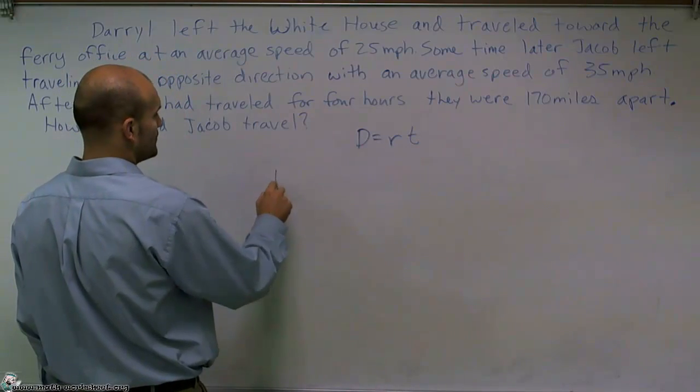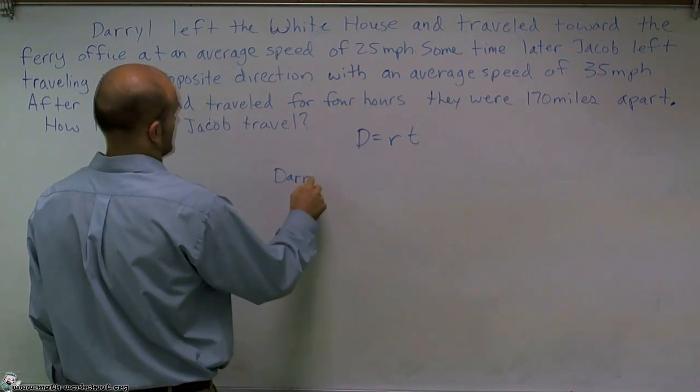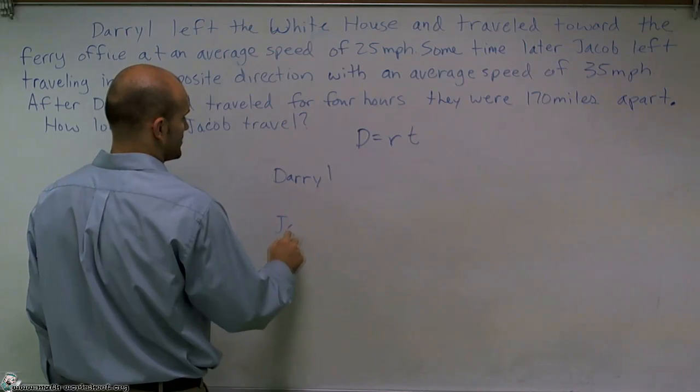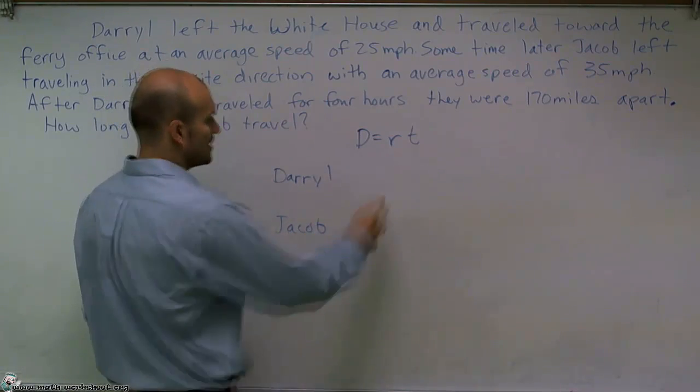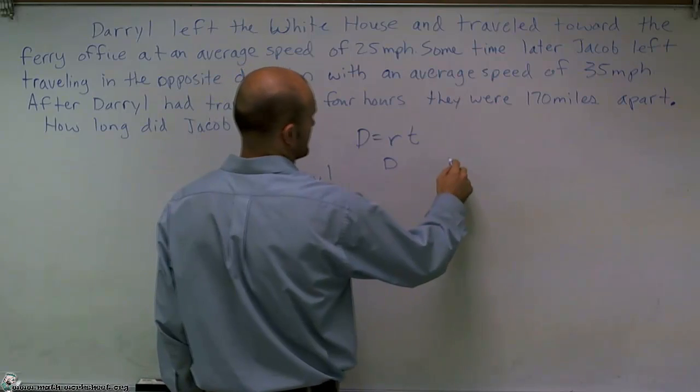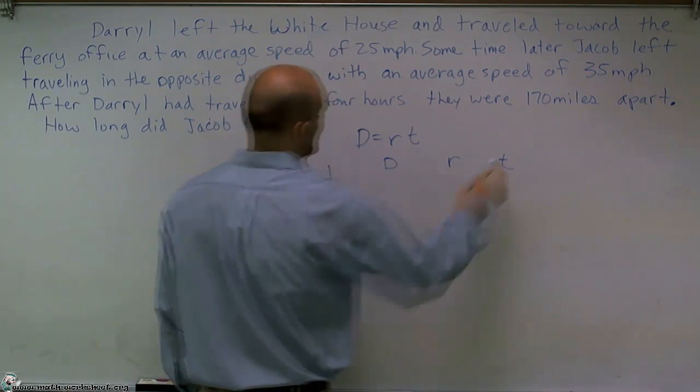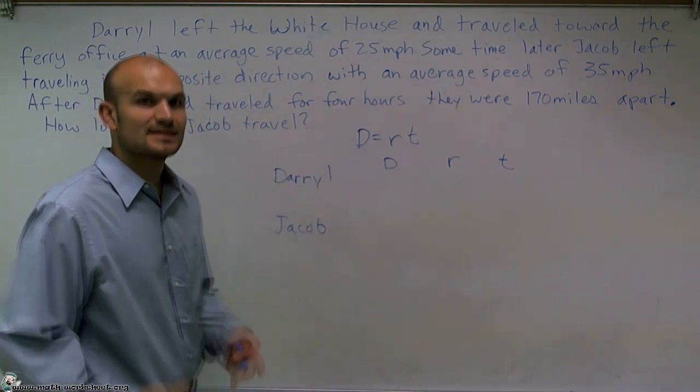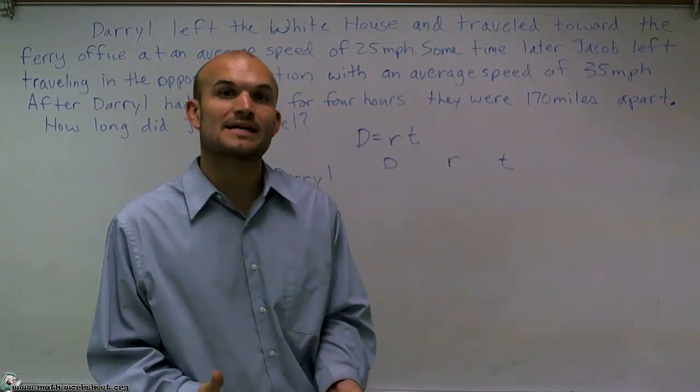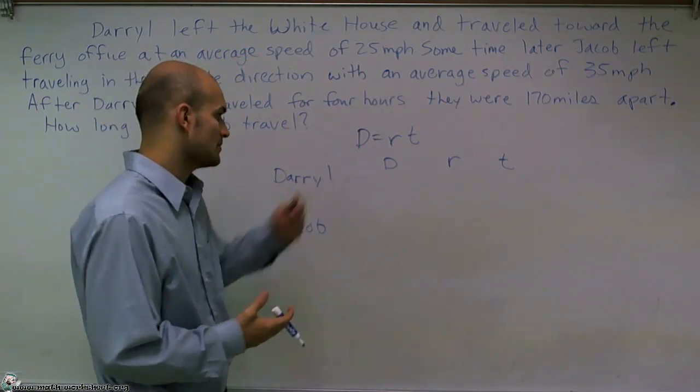I'm going to set up Daryl and I'm going to set up Jacob. And for both of them, I'm going to set up a distance, a rate, and a time. And what I'm going to do is I'm just going to put in the information that we know for each one of them.